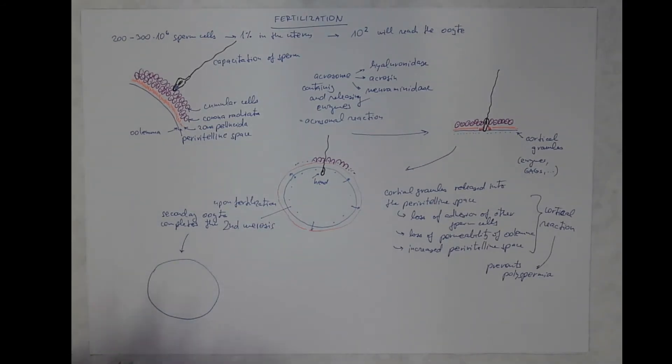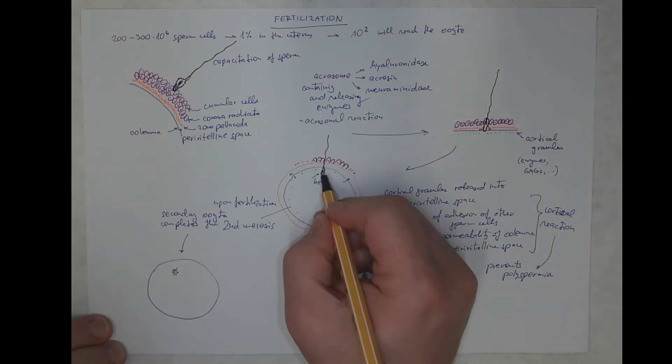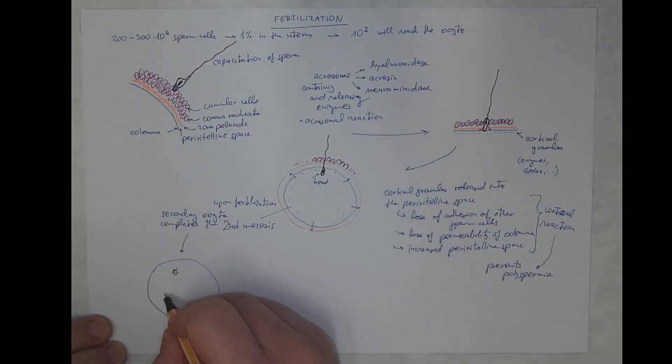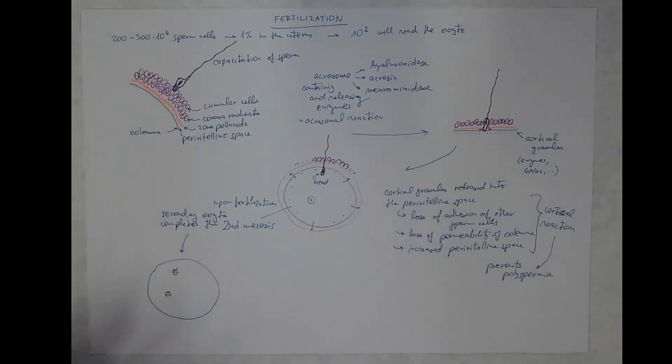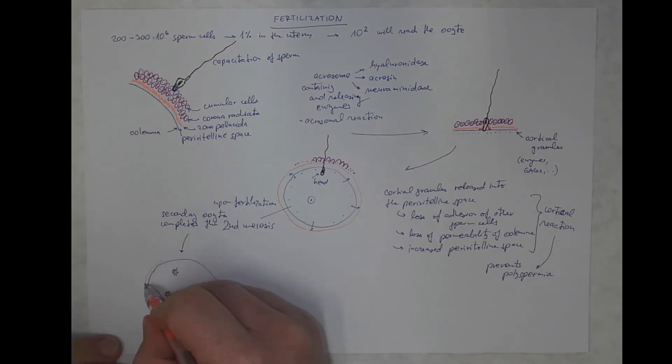Upon completion of the second meiosis, we will see two pronuclei before they will fuse together. It will be the paternal or the male pronucleus from the nucleus of the sperm cell and the maternal or female pronucleus from the nucleus of the oocyte. So if this is the fertilized oocyte, it's still surrounded by the zona pellucida.